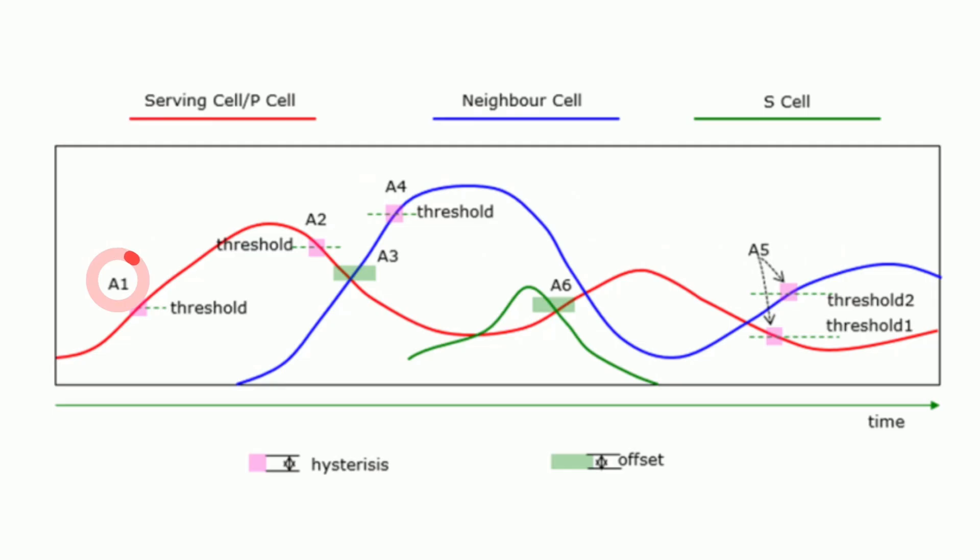Event A1. This event occurs when the signal strength or quality of the serving cell becomes better than a predefined threshold. It's used in intra-frequency handovers to indicate improved serving cell conditions, potentially eliminating the need for a handover.